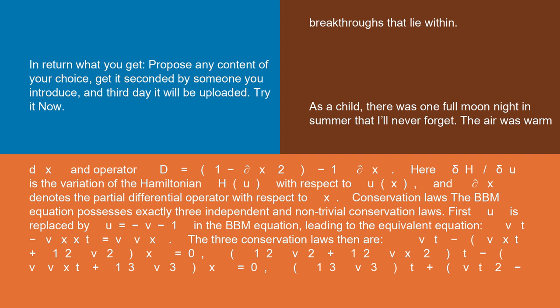The three conservation laws are: (v_t - v_xxt + 1/2*v²)_x = 0; (1/2*v² + 1/2*v_x²)_t - (v*v_xt + 1/3*v³)_x = 0;